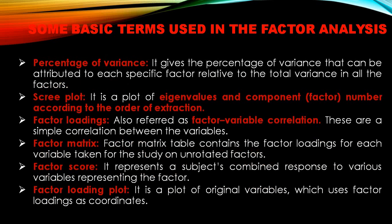Percentage of variance gives the percentage of variance attributable to each specific factor relative to the total variance. The scree plot is a plot of eigenvalues — wherever you find the steepest drop, you retain the factors before that point. Factor loadings, also known as factor-variable correlations, are simple correlations between variables and factors. The factor matrix contains the factor loadings of each variable on unrotated factors. A factor score represents a subject's combined response to various variables representing the factor.